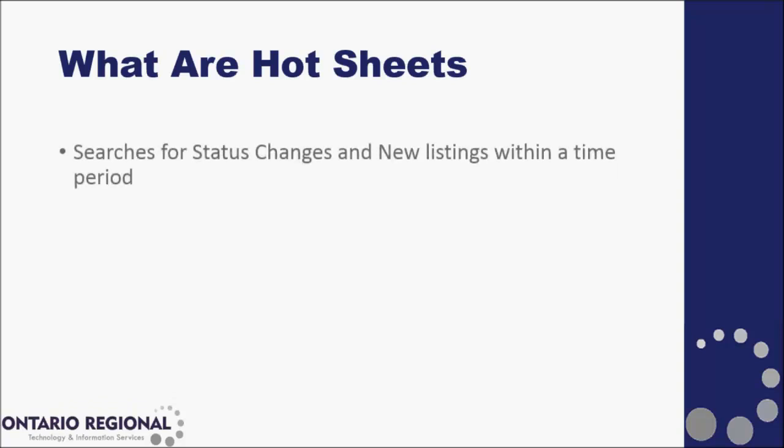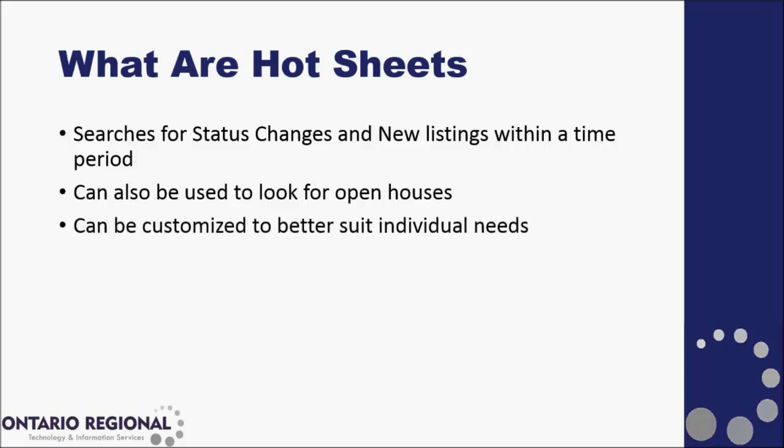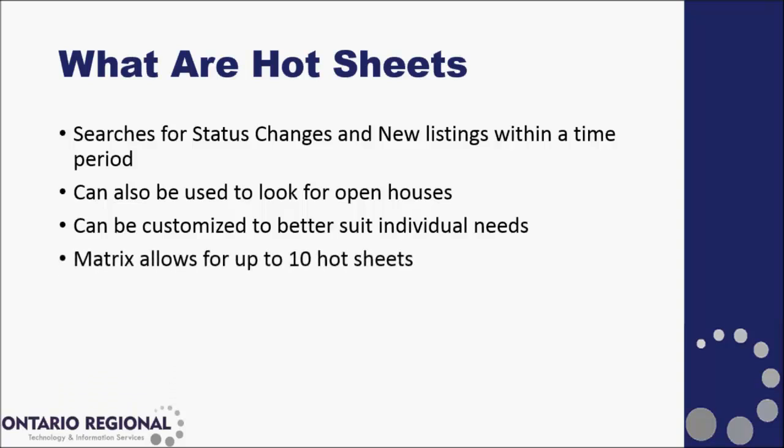Hot sheets are a list of changes and new listings from within a given time period. You can also use them to look up open houses that are upcoming on the system. They can be customized to better suit your needs within price ranges, districts, or sub-districts. Matrix will allow you to have up to 10 custom hot sheets on your homepage and within your hot sheet widget.